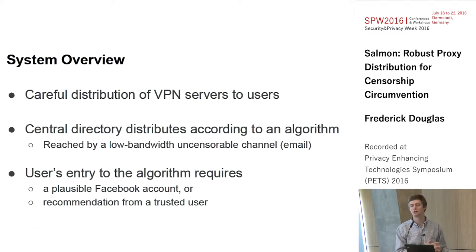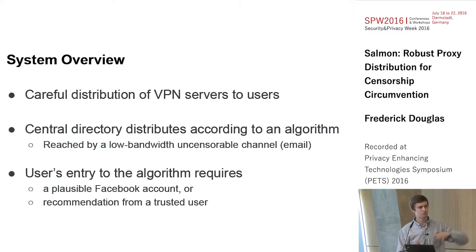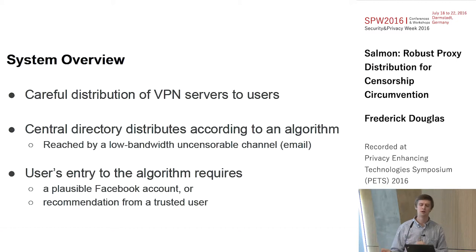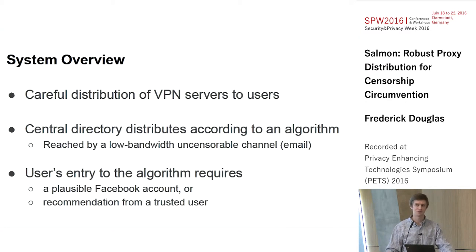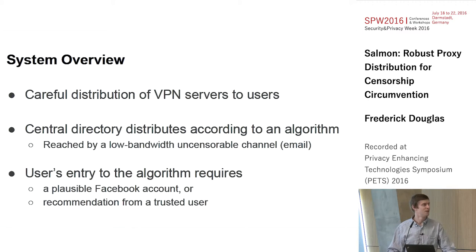We have built into our client machinery for the client's requests to get tunneled through an encrypted email provider, like Gmail or something, or any other encrypted provider that isn't blocked in the user's country — because Gmail isn't necessarily a good choice for that.